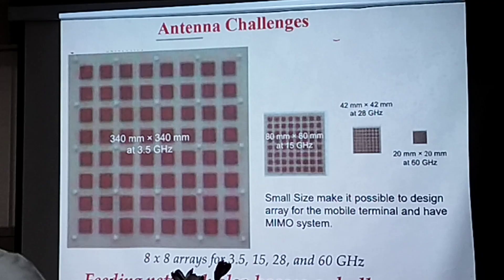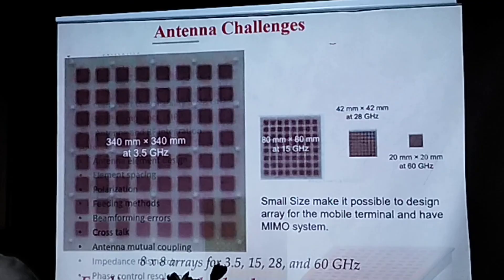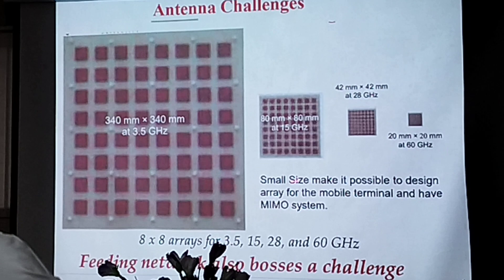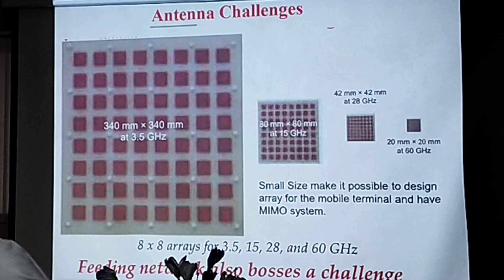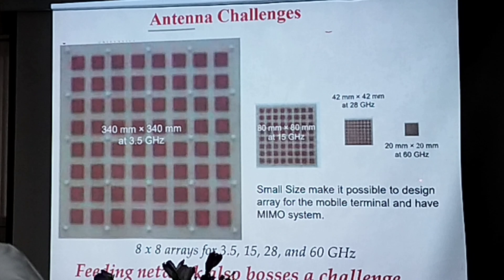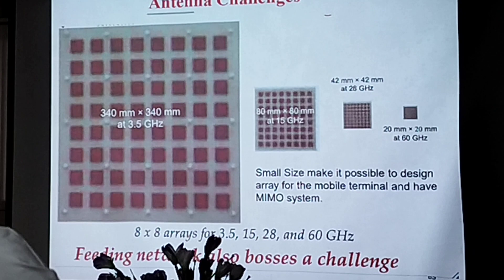At 60 GHz and higher frequencies, the feeding is a tricky thing. You cannot have a standard connector since your antenna size itself is 2 centimeters at 60 GHz. Nowadays you get RF connectors with a very small tiny pin — just touching it, you cannot solder it. If you solder it, the tracks will get short circuited.